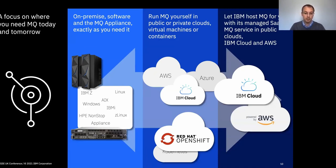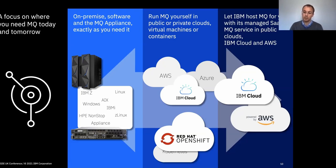Traditionally that's been on different platforms hosted in data centres — Windows, Unix, Linux, or IBM Z. We've also got the MQ appliance available since 2015, which is a dedicated hardware offering that hosts queue managers, almost like an MQ hub in a box that you can plug into your data centres and configure with minimal overhead. We've also been focusing on ensuring that you can run MQ in clouds, either in VMs or in containers.